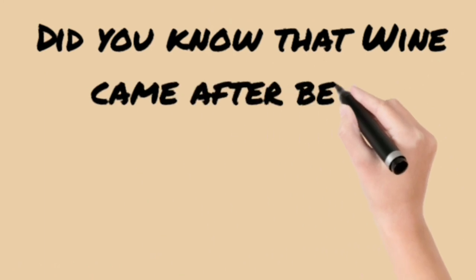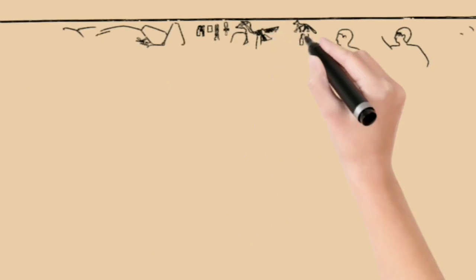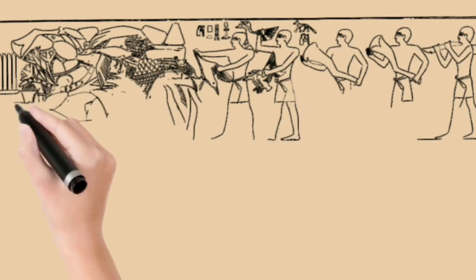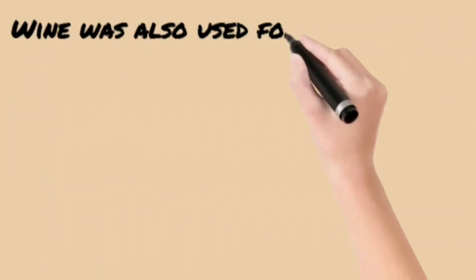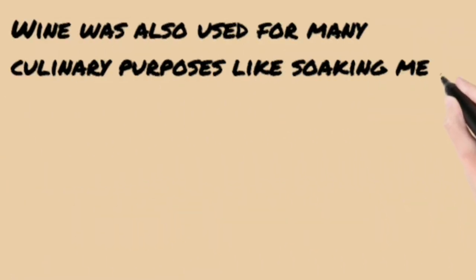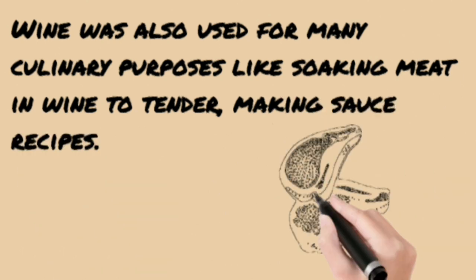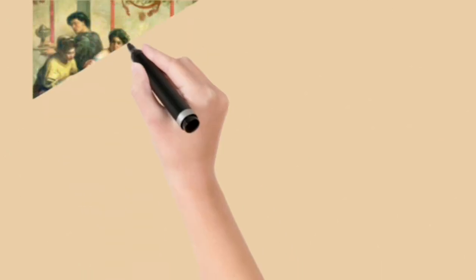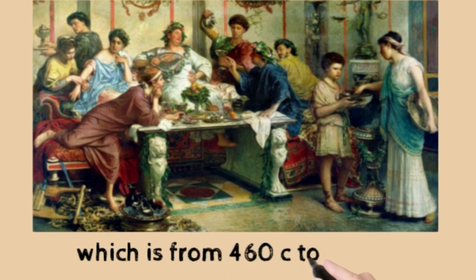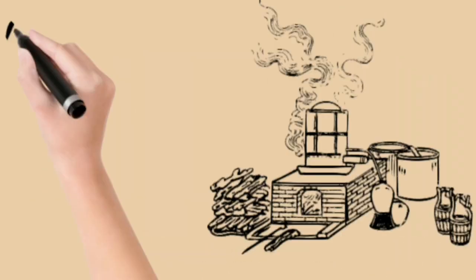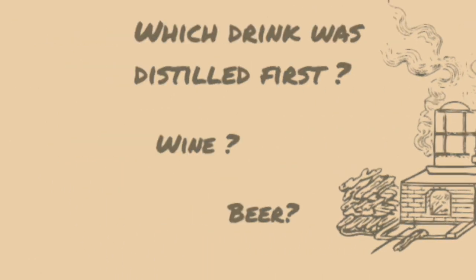Wine came after beer, but was to become of crucial cultural and religious importance to the civilizations of Egypt, classical Greece, and Rome. Wine was also used for many culinary purposes, like soaking meat in wine to tenderize it and making sauce recipes. This Greek painting shows Greeks sharing drinks at a banquet, dated from 460 BC to 450 BC.